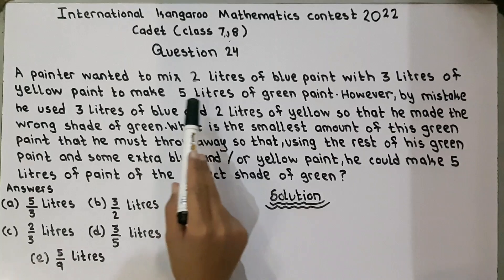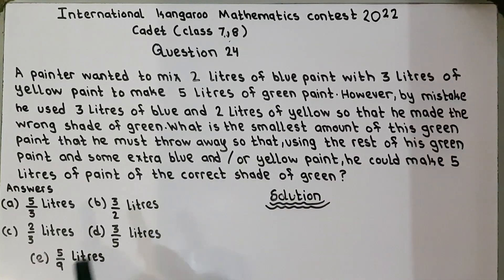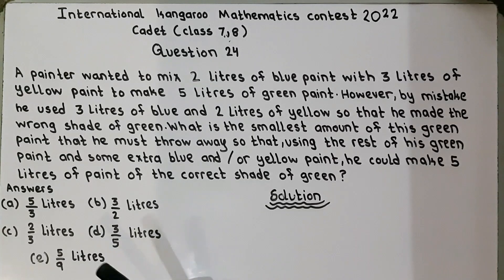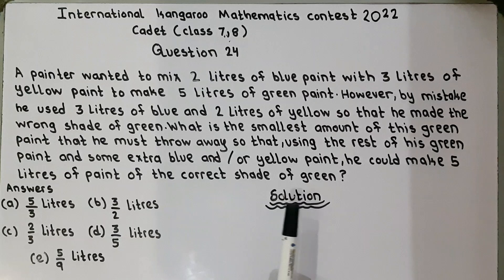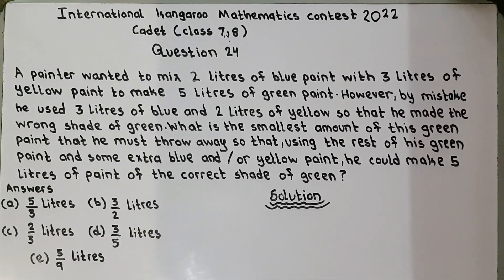A painter wanted to mix 2 litres of blue paint with 3 litres of yellow paint to make 5 litres of green paint. However, by mistake he used 3 litres of blue paint and 2 litres of yellow, so that he made the wrong shade of green. What is the smallest amount of this green paint that he must throw away so that, using the rest of his green paint and some extra blue or yellow paint, he could make 5 litres of paint of the correct shade of green?